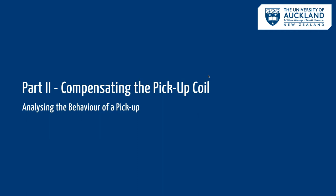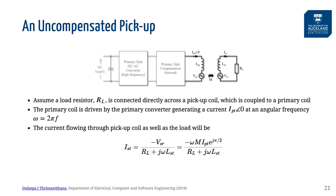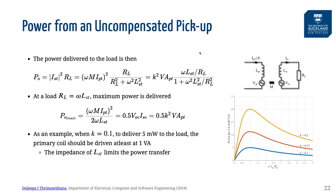So why do we need compensation networks? Let's look at an uncompensated pickup that delivers power to a load represented as an AC resistor RL. Assume that the primary has a fixed current IPT. We can easily determine the power transfer to the load RL. If we plot power against the ratio between the impedance of the pickup coil and RL, the maximum power delivered happens when this ratio is 1. When K equals 0.1, to deliver 5 mW, we need to supply one VA into the primary coil, which is not efficient for transferring hundreds of watts.